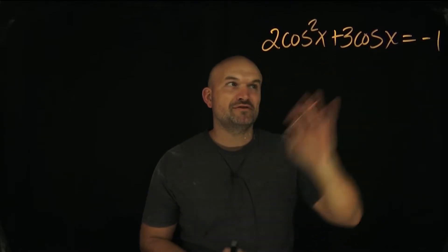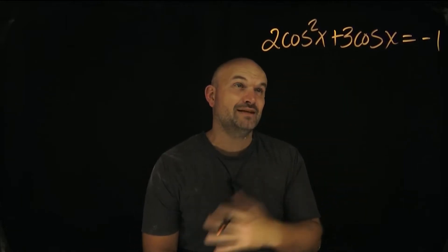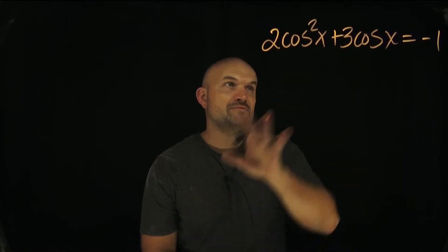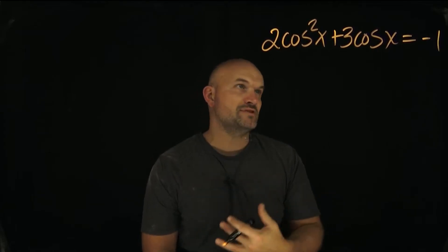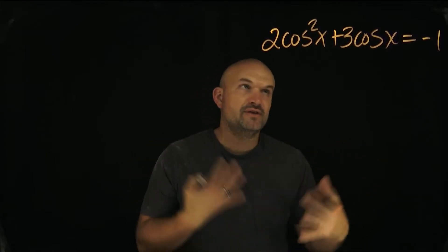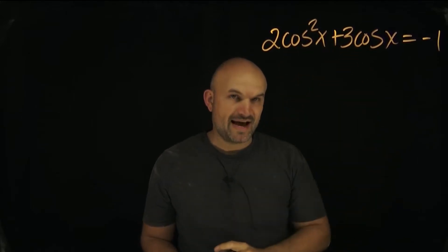So when we're trying to solve a trigonometric equation, typically we're not going to be doing factoring and stuff like that. But in this problem, that's exactly what we're going to need to do. A lot of times we can simplify a trigonometric equation by using some identities or inverse operations. But in this example, notice that we have a cosine squared of x and a cosine of x.